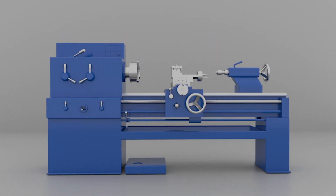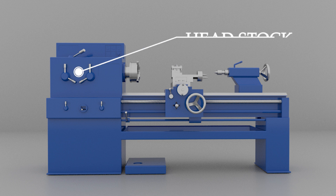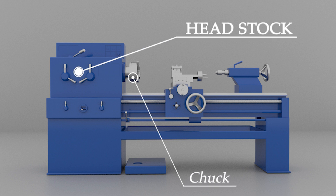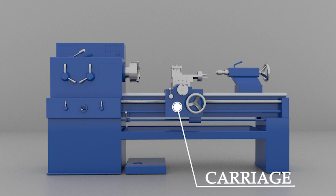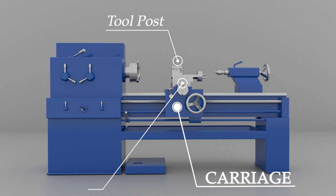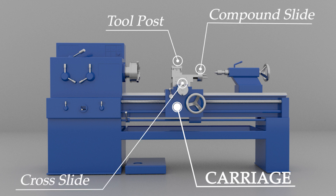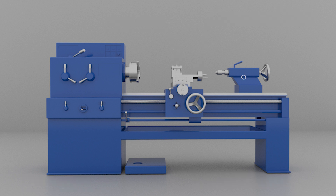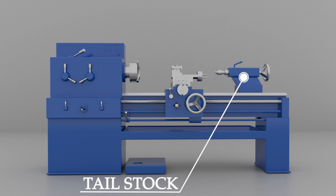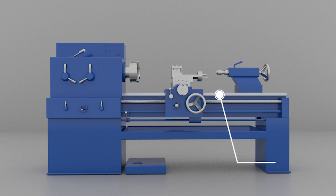Let us see the various parts of center lathe. We have the headstock comprising of the chuck, the motor and gear assembly. The carriage assembly having the tool post, cross slide and the compound slide mechanism. Next, we have the tailstock comprising of the dead center assembly. And next, we have the bed.